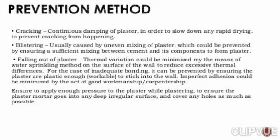For falling out of plaster, thermal variation could be minimized by the means of water sprinkling on the surface of the wall to reduce excessive thermal differences. For inadequate bonding, it can be prevented by ensuring the plaster is plastic enough — that is, workable — to stick into the wall. Imperfect adhesion could be minimized by good workmanship. We have to ensure to apply enough pressure to the plaster while plastering, in order to ensure the plaster mortar goes into any deep irregular surface and covers any holes as much as possible.